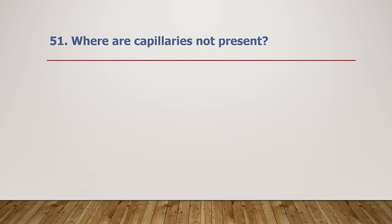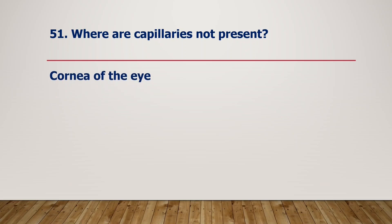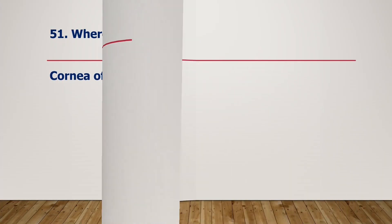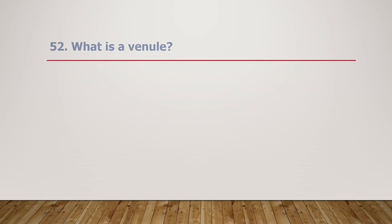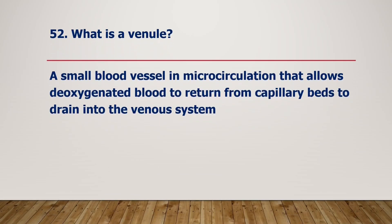Where are capillaries not present? Capillaries are not present in the cornea of the eye. What is a venule? A venule is a small blood vessel in microcirculation that allows deoxygenated blood to return from capillary beds to drain into the venous system.